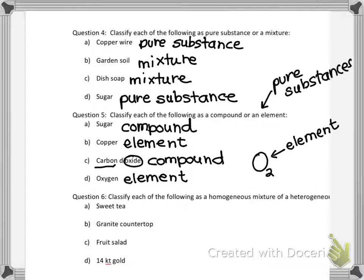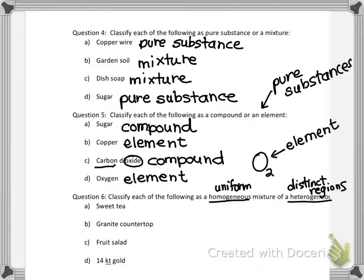Question six: classify each of the following as homogeneous or heterogeneous. Homogeneous means uniform — you can't see the differences. Heterogeneous means it has distinct regions. Sweet tea is homogeneous — assuming you haven't added so much sugar that it sits at the bottom, you can't tell the components apart. A granite countertop is heterogeneous — we can see different components within the granite.